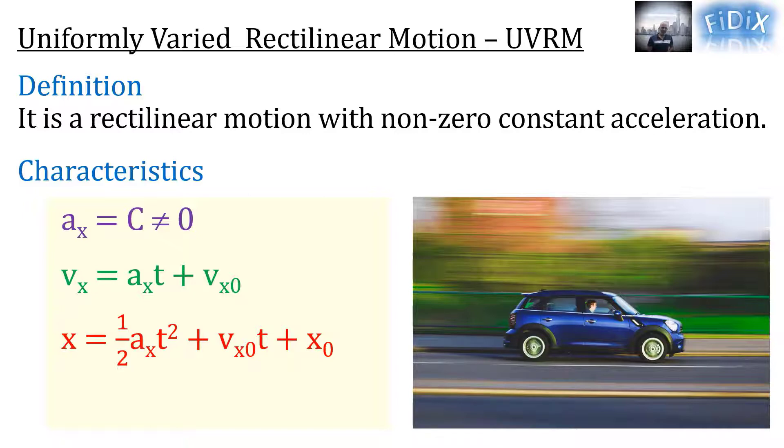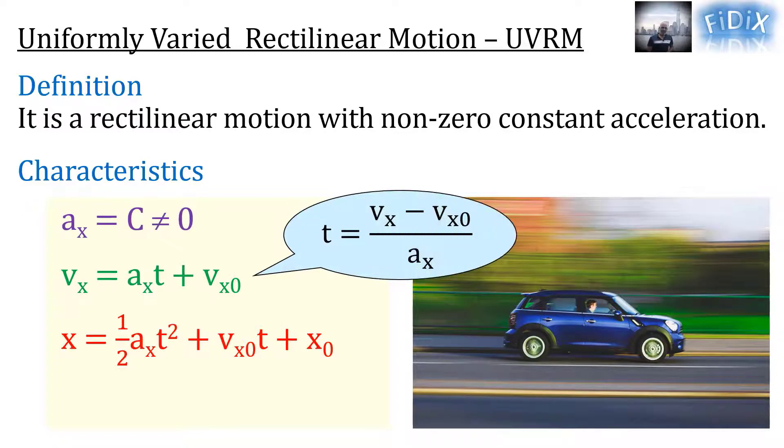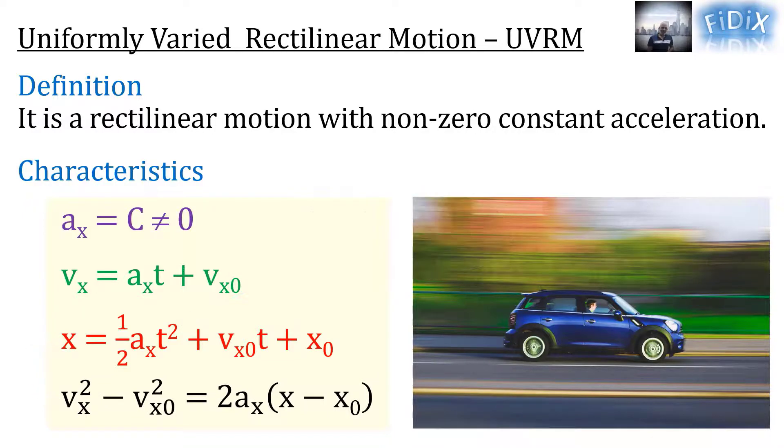The equation of vx gives t equals (vx - vx₀) all over ax. If we replace t by its expression in the time equation of x, we get what we call the time-independent equation, vx² - vx₀² equals 2ax into (x - x₀) or Δx.